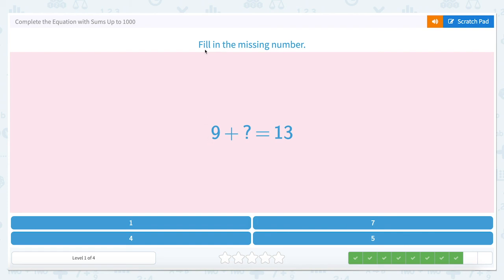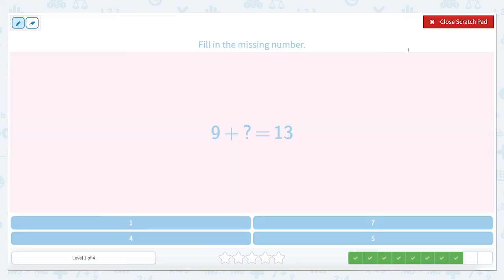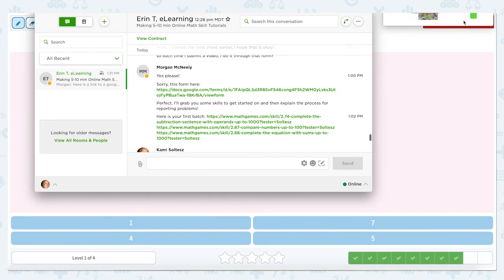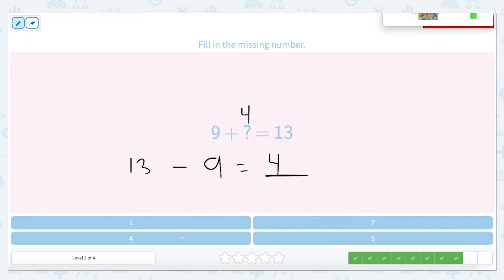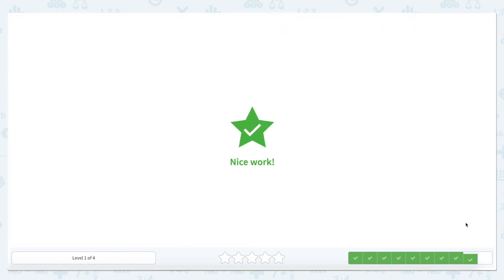We're filling in the missing number again here. So 9 plus something equals 13. So I can do 13 minus 9 equals what? Well, I can count up again, 9, 10, 11, 12, 13. That would be 4. So 9 plus 4 is 13. Let's close out of that. Hit 4.